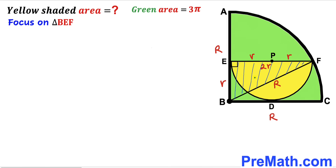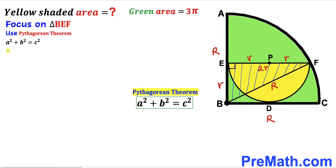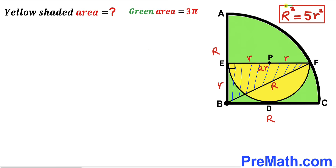Let's focus on right triangle BPF and apply the Pythagorean theorem: a² + b² = c². Our hypotenuse is uppercase R, and the two other legs are lowercase r and 2r. Filling in: r² + (2r)² = R², which gives r² + 4r² = R². Therefore, R² = 5r².